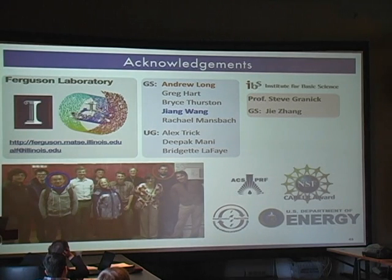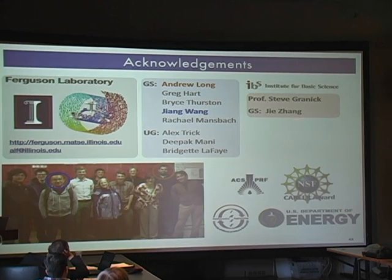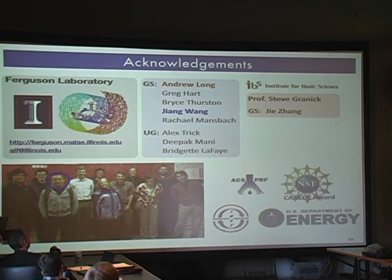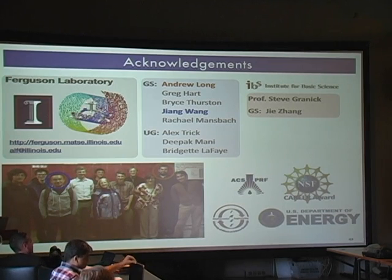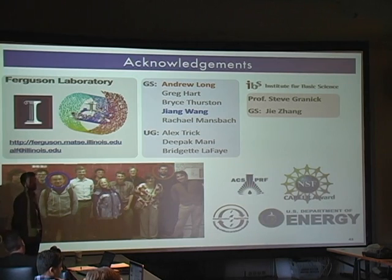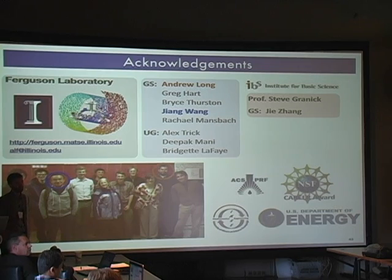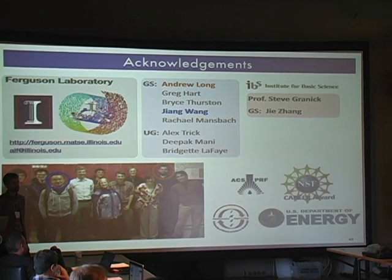I'd like to thank the folks who did the work: the first part on machine learning of self-assembly was done by Andrew Long, the second part by Jiang Wang, and our collaborators Steve Granick and his graduate student Jia Zhang, along with the various funding sources for the projects in the lab. Thanks so much for your attention. We have some time for questions. One question raised: for the assembly clusters, how do you know the reaction coordinates you got are good ones — for example, have you done committor analysis?